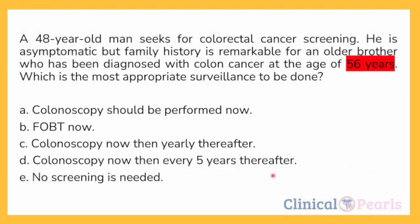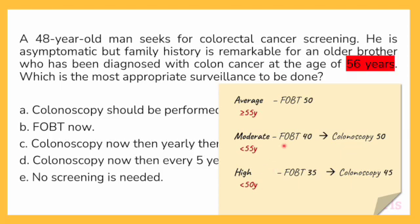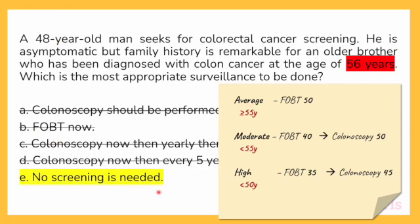Note that the brother's age of diagnosis is more than 55 years, making this patient average risk. For average-risk patients, FOBT is done at age 50. Colonoscopy is only done for selected patients, and this patient is neither moderate nor high risk, so we can cross out A, C, and D. FOBT should be done, but not until he reaches 50 — this patient is only 48. So the answer is E: no screening is needed at this time.